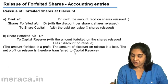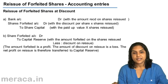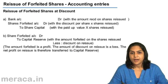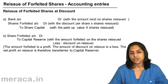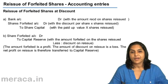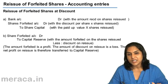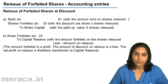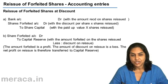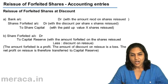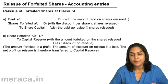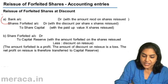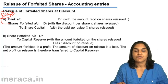Reissue of forfeited shares at a discount. In this case, there is a small change. The normal entry on issue of shares at a discount was: Bank account debit, Discount account debit, to Share Capital. But now, instead of Discount account, we say Shares Forfeited account debit. When we are reissuing these shares at a discount, that is a loss — a capital loss — and we set it off against the gain we made on forfeiture of the shares.